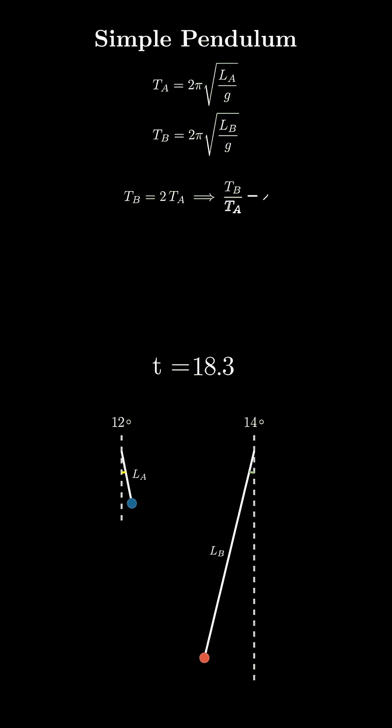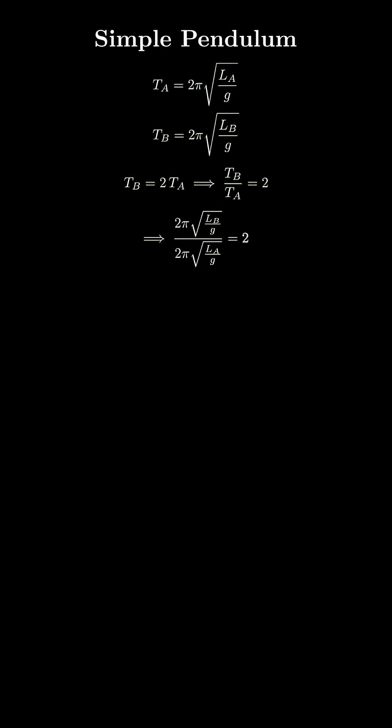And because TB is given twice TA, so TB over TA equals 2. Replacing TB and TA by their formulas above, we cross out 2π from the numerator and the denominator. G could be crossed out now, which implies radical LB over LA is equal to 2.